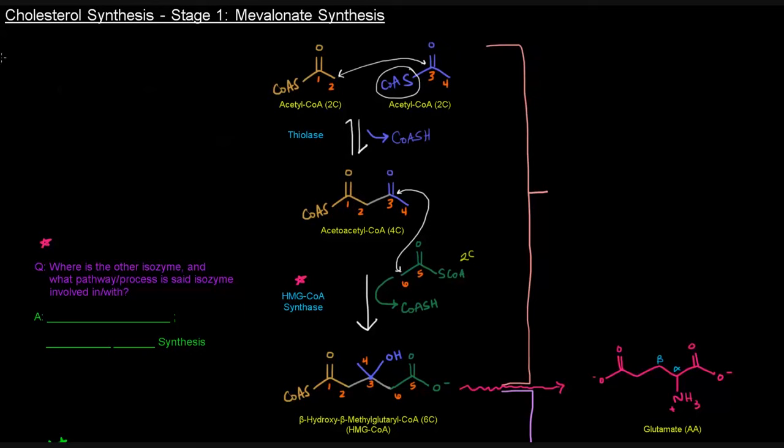Before I answer that question, I want to say that these first few steps that are bound here by this sort of light pink bracket, these first two steps occur in the cytosol of the cell. So this HMG-CoA synthase is the cytosolic isozyme, and the other isozyme is located in the mitochondria. And the pathway or process that it's involved in is ketone body synthesis, which is something that we actually haven't talked about in any of my videos quite yet, at least as of the recording of this video. But it's something that I may discuss another time.